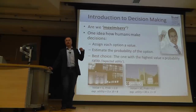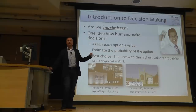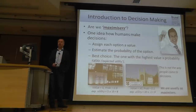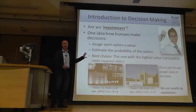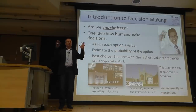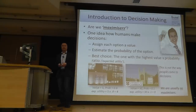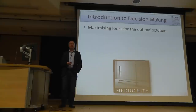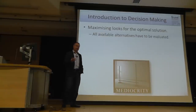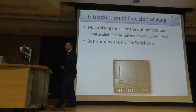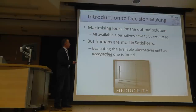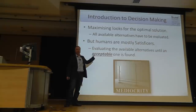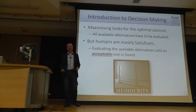Nobody actually derived their decision to apply to Brunel via this method. It has turned out this is not the way people come to decisions — we are usually not maximizers. Instead, humans have been termed satisficers. We evaluate a couple of alternatives until we find an acceptable solution and say, 'I can live with that.' We know we may not have the best option, but we stop there.